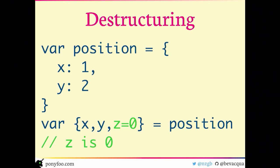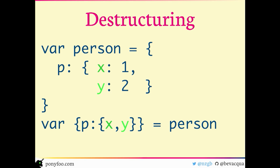There are also default values. So if a property is missing in the position object you can provide a default value for it. There's also deep destructuring, which means you're able to access something like person.p.x and define x and y variables. This is really where aliases make sense — you can do personX and personY, giving a little more context to the variable name.